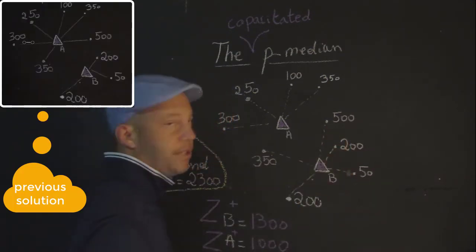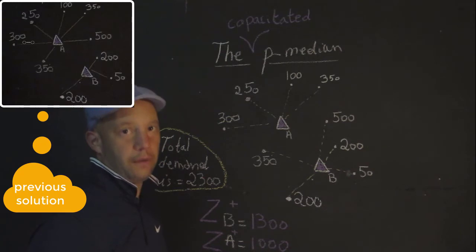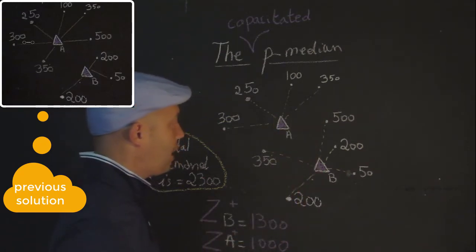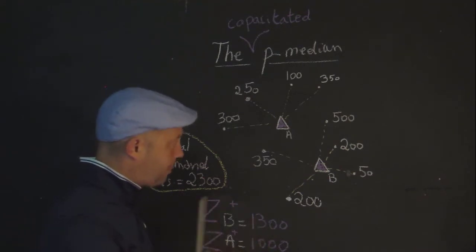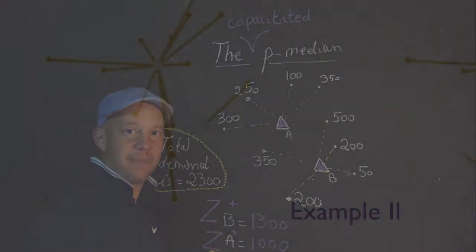And that means that all of the others can be assigned to B without exceeding the capacity. That solution does not change a whole lot compared to the previous one. Maybe a slight little bit because 500 was assigned there, I believe. What if we were to change these numbers? What if they are different? How would then the allocation change? That's the next example.